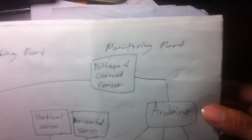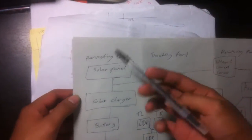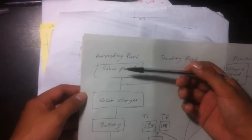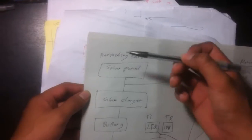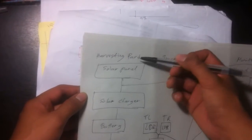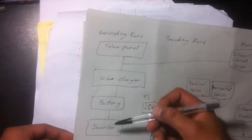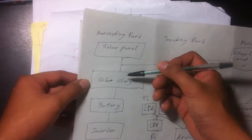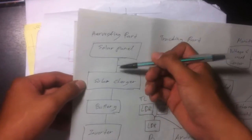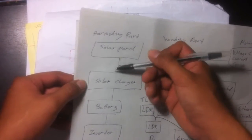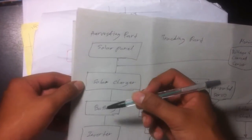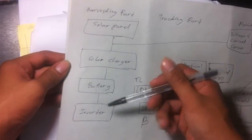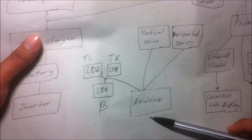Our project is composed of three parts: the harvesting part, the tracking part, and the monitoring part. In the harvesting part, this is where we collect the solar energy from the sun using a solar panel — the solar energy is converted to electrical energy and stored in a battery. The solar charger controls every voltage that the solar panel produces, controlling the voltages that charge the battery. The inverter converts DC voltage to AC voltage.